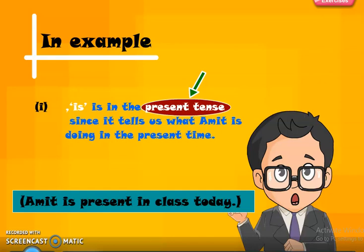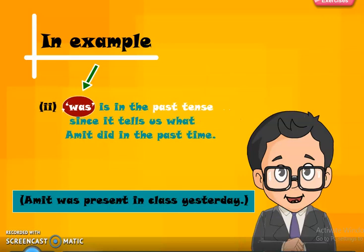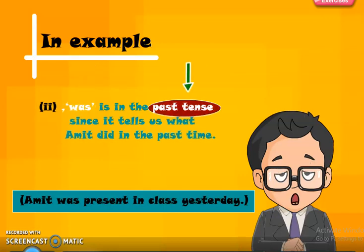In example two, 'was' is in the past tense, since it tells us what Amit did in the past time. 'Was' shows past tense — it shows what happened before. So 'was' and 'were' indicate the past tense.